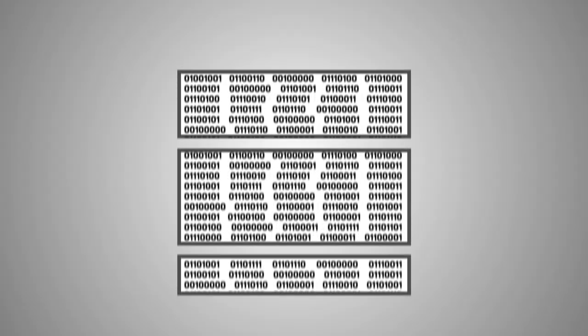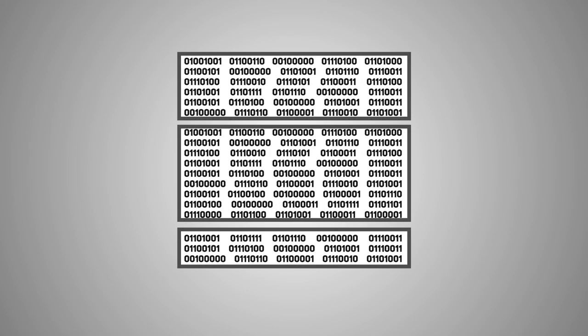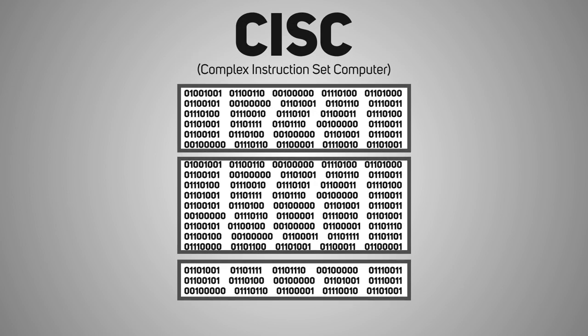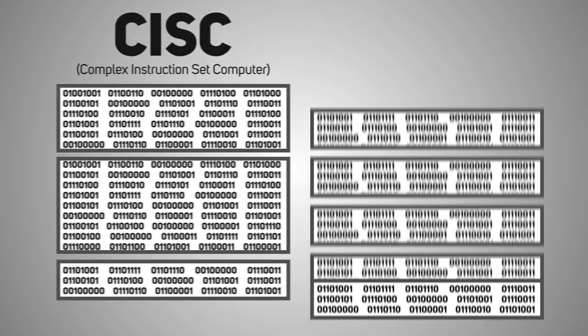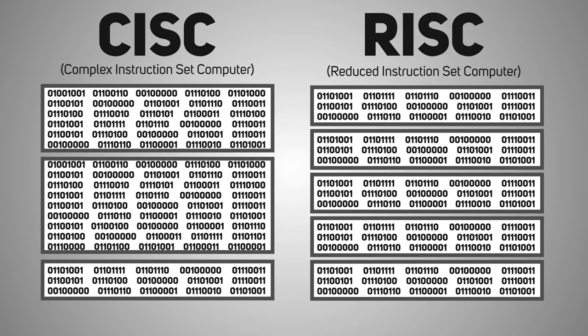To understand the differences between these three processor families, we need to take a few steps back and look at the basis of each. The CPU is the brain of the server, but it only works when given very specific instructions — suitably called the instruction set — which tell the processor to move data between registers and memory or to perform a calculation. If the instruction set is varied and complicated, the CPU design is termed CISC, complex instruction set computer. If it is less complex and more uniform, the design is termed RISC, reduced instruction set computer.